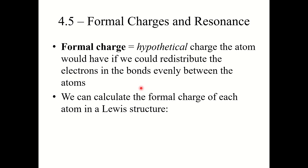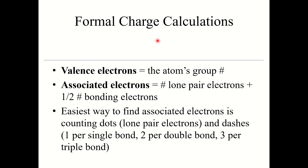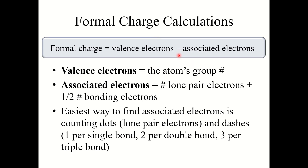We can calculate the formal charge of each atom in a Lewis structure using this equation: formal charge equals the valence electrons minus the associated electrons. Valence electrons refers to the atom's group number — how many valence electrons it would have by itself. Associated electrons are the sum of the lone pair electrons plus half the bonding electrons. The easiest way to count associated electrons is to count dots and dashes: one for a single bond, two for a double bond, and three for a triple bond.